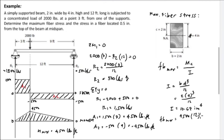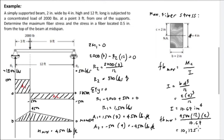F_b maximum equals M times C divided by I. Converting the moment: 4,500 pound-feet times 12 gives 54,000 pound-inches. Multiplied by C equal to 2 inches and divided by I equal to 10.67, we get F_b maximum equals 4,500 times 12 times 2 divided by 10.67, which equals 10,125 pounds per square inch.